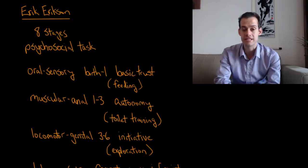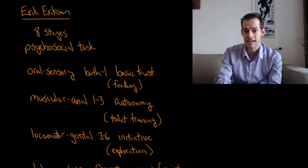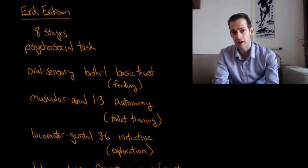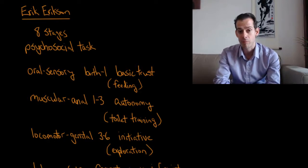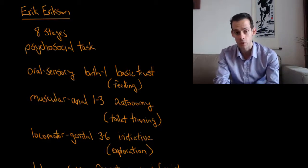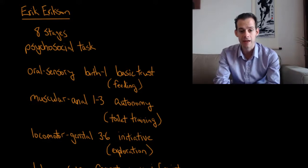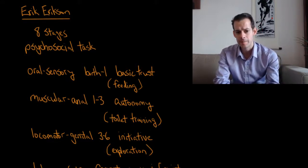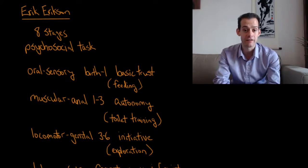Then we move to the third stage which is the locomotor genital stage. This lasts from age three to about age six. Erikson thought this is where we develop a sense of initiative and exploration. If you think of Freud's stage, the genital stage, Freud proposed that the Oedipal complex was occurring here. The main idea is that you have to learn to break free from your mother, from your primary caregiver. You're learning that mom is not everything and you need to be able to explore the world on your own. For Erikson, you develop a sense of initiative. You're willing to explore the world on your own and become more independent.